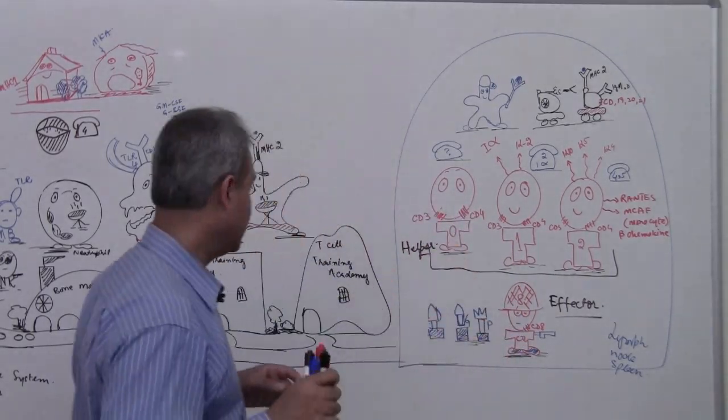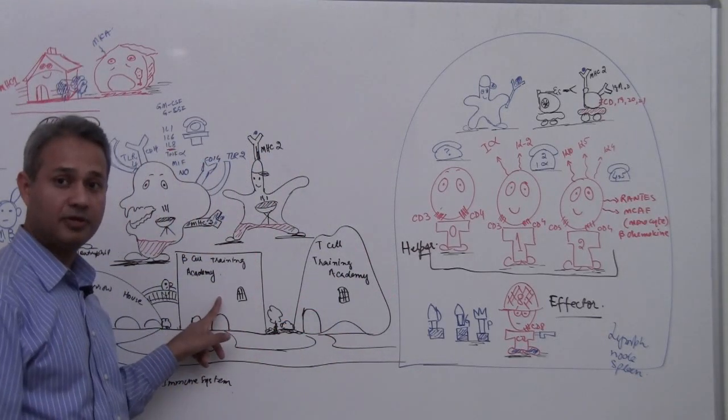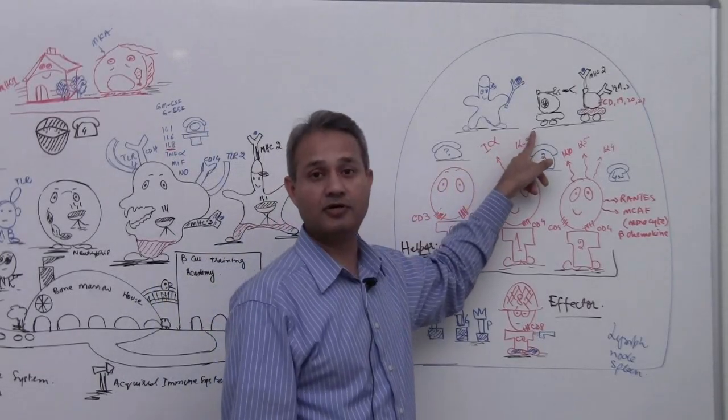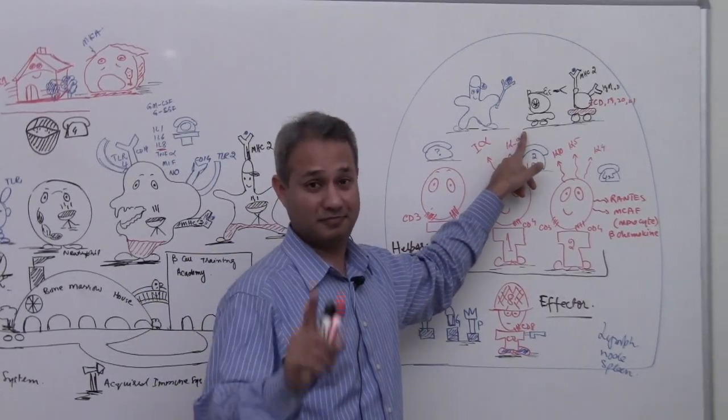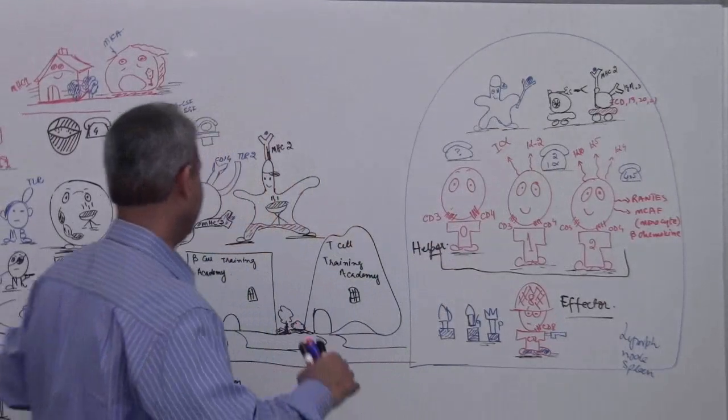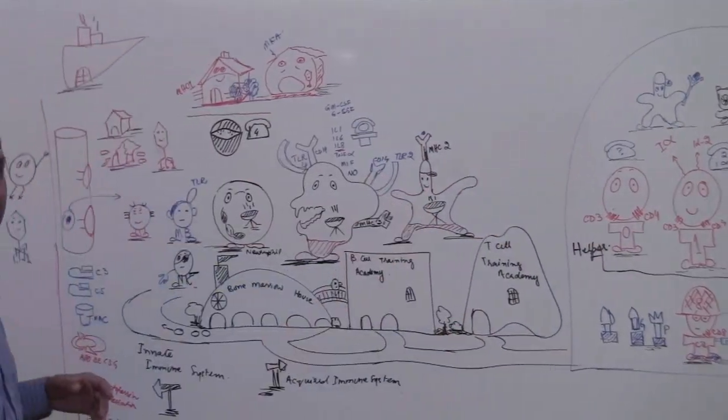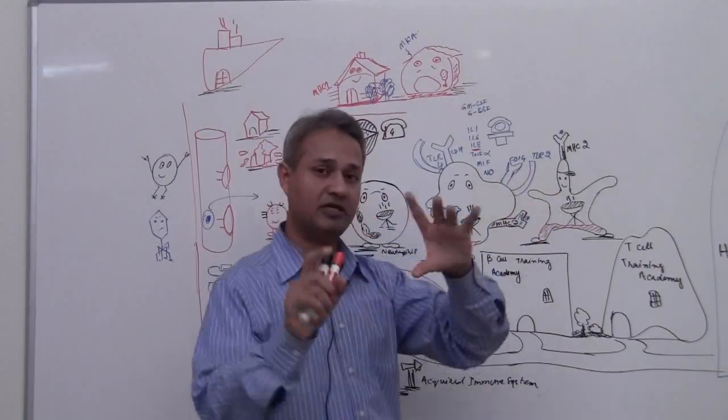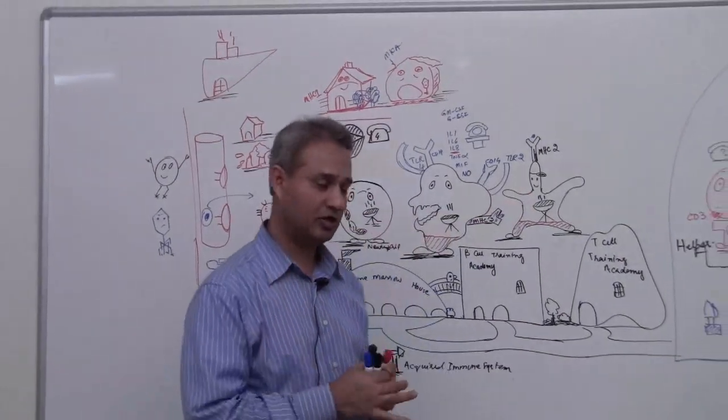So remember, B cells get trained in the bone marrow and B cells get refined training in the lymph node. Don't forget that. So anyways, this is the basic bigger picture. In our next lectures we'll talk about how the... let me just do one more quick topic here.